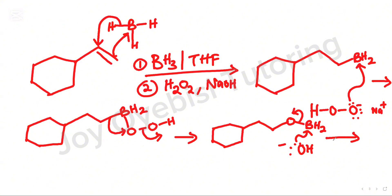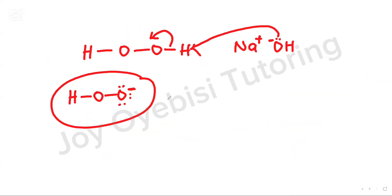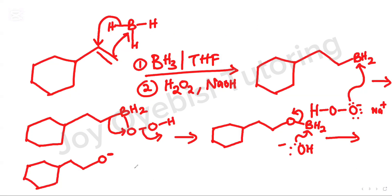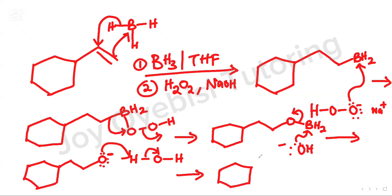When the OH picked up the hydrogen, it formed H2O, and that H2O is going to protonate this oxygen. The oxygen picks up hydrogen from the H2O, that bond breaks, and the final product is an alcohol — a primary alcohol. So these are the different reagents you can use to add a hydroxyl group to an alkene and what each of them does. Thank you for watching and have a wonderful day.